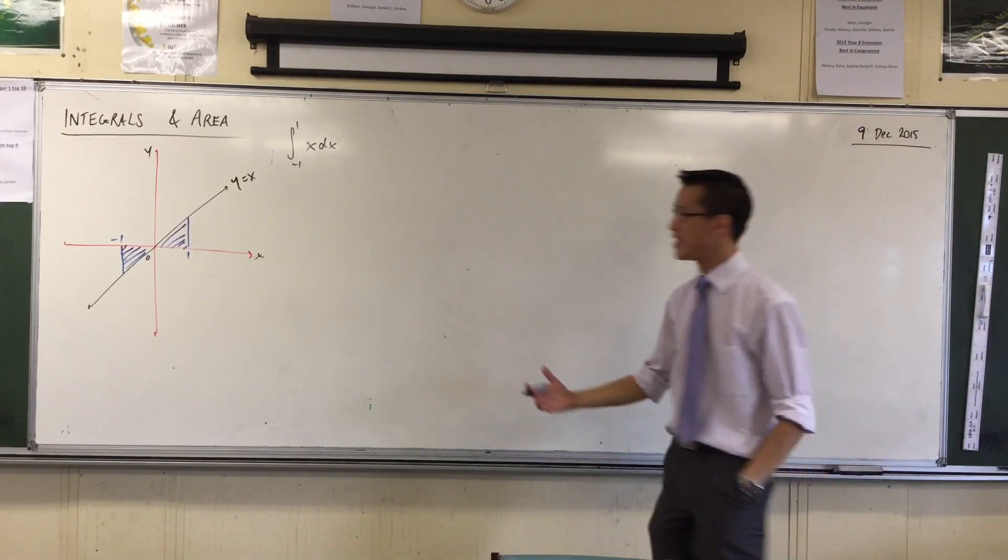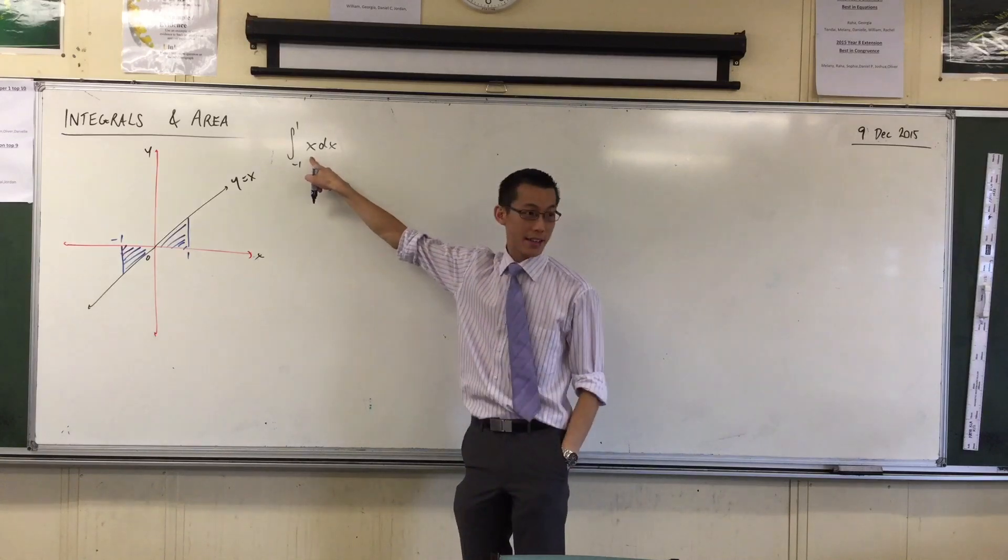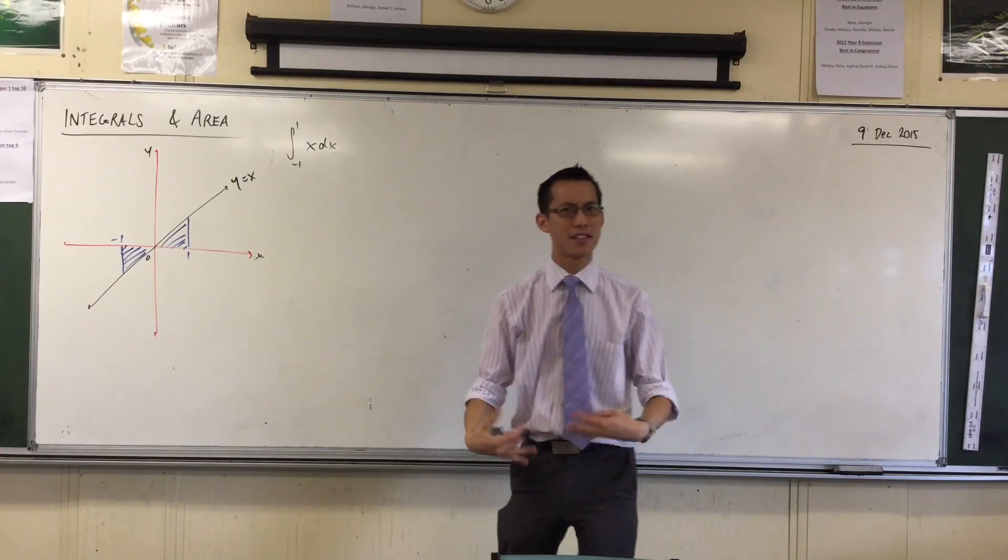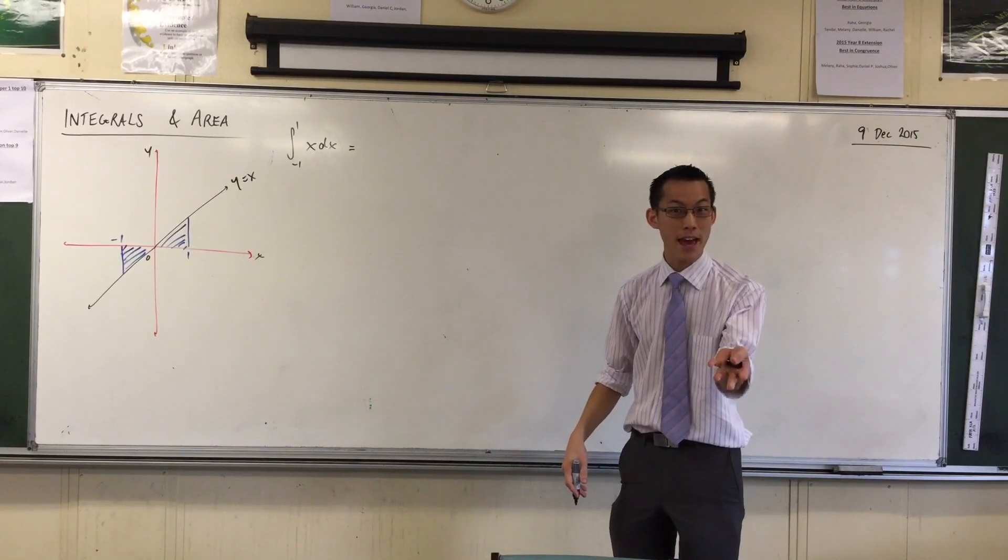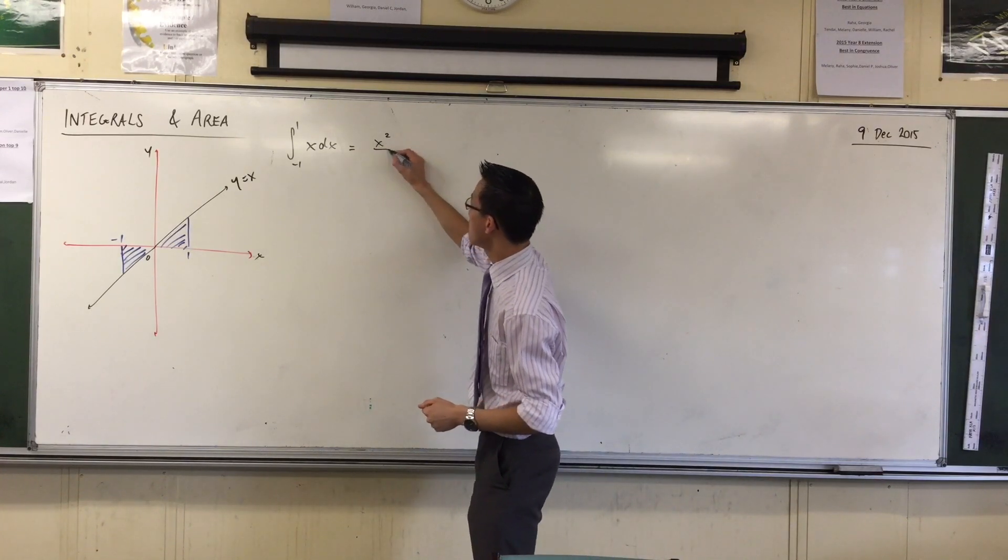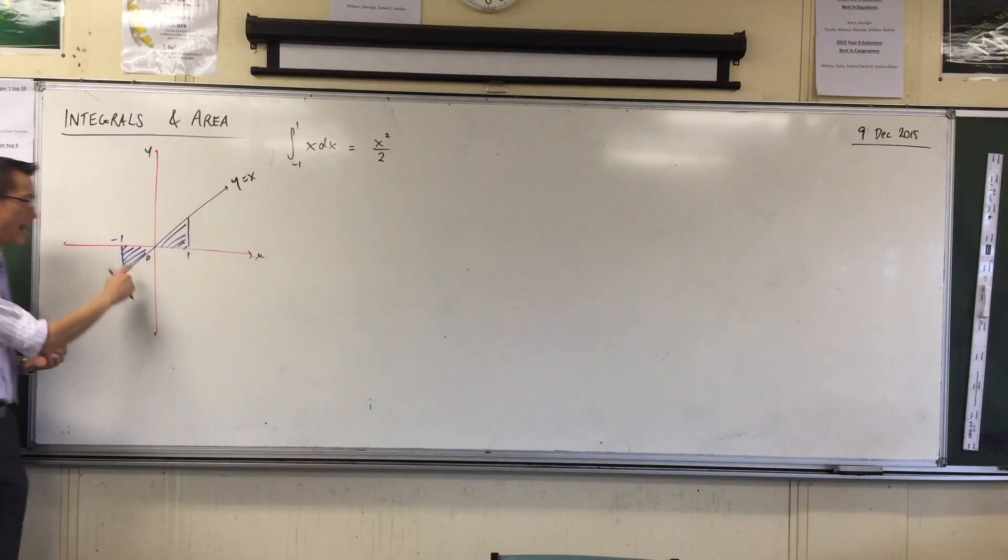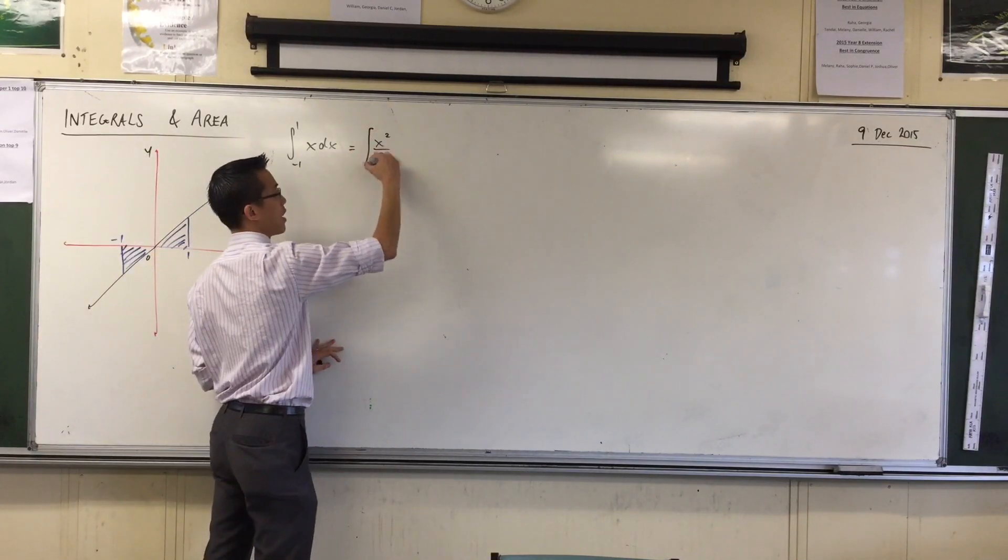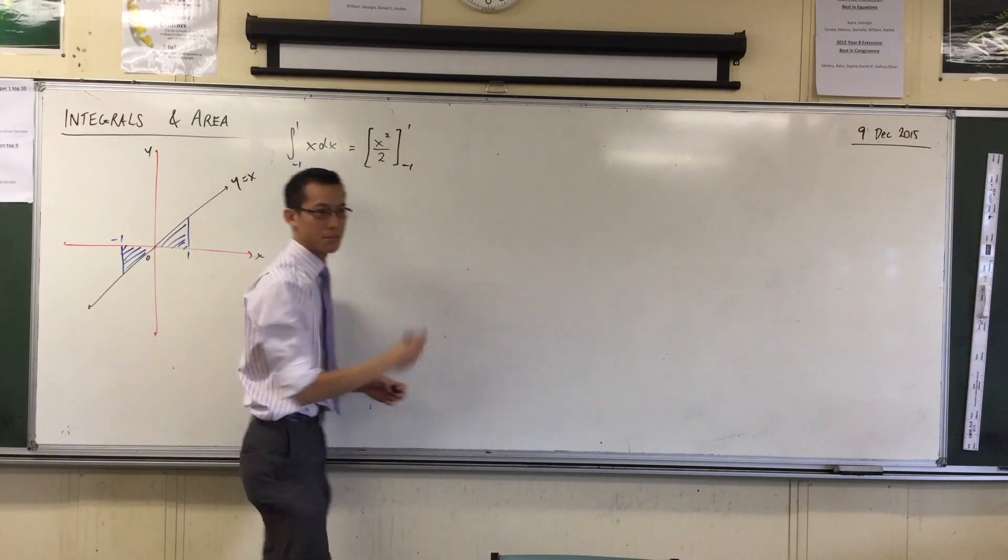Now, when I have a look at this, I think, well, this is not complicated. I just need to know what the primitive of x is, and you've done this a few times now. So what's the function that you differentiate to leave you with x? x squared on 2. x squared on 2, very good. The power, it goes up, and then you divide. But I need to evaluate that at its beginning and its end. So that's why I put the square box around there, and I say from negative 1 to 1.